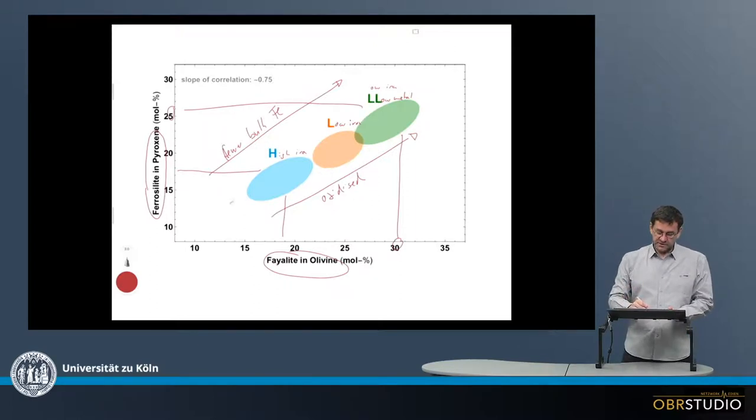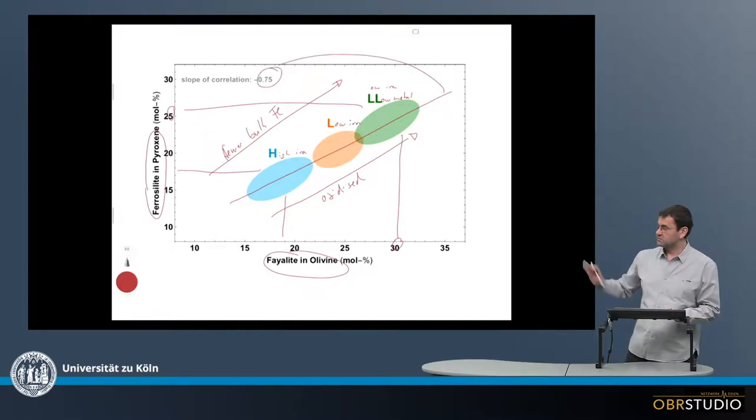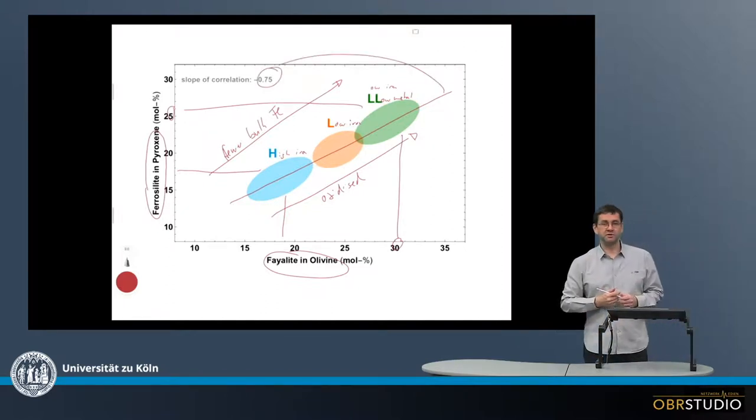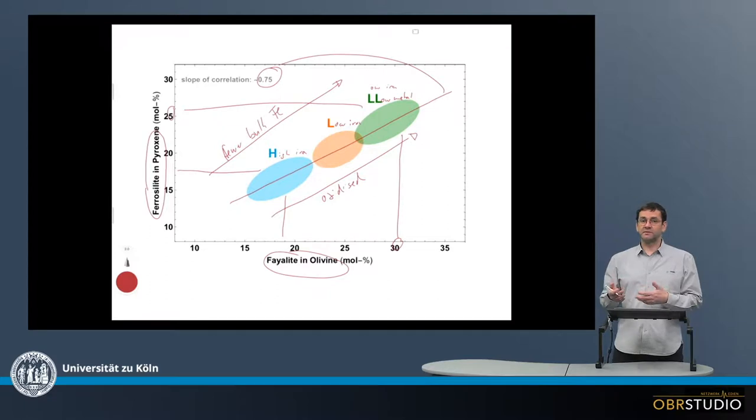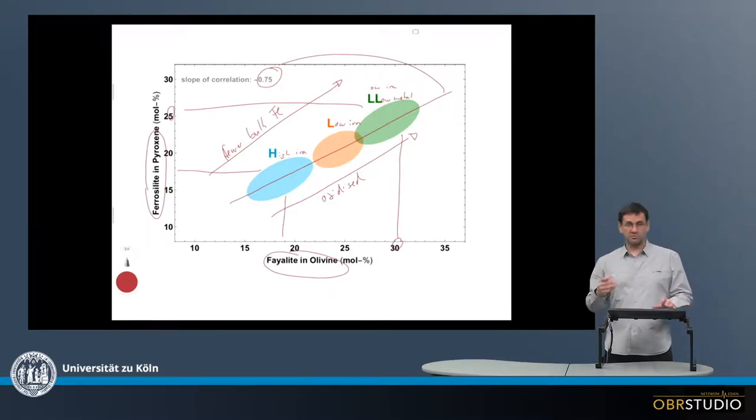Another thing you can observe here is that there's a certain correlation among these groups, and this correlation has a slope of around 0.75. This means that, in general, the olivine takes more iron than the pyroxene. This is because there's also a higher diffusion of iron into the olivine. For example, in higher petrologic types, it will always be the olivine that takes more iron initially.